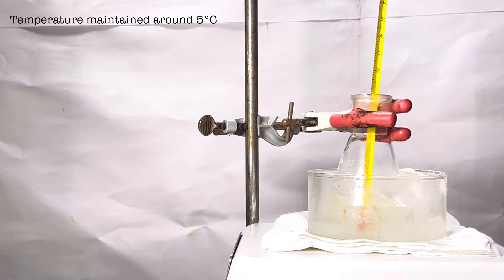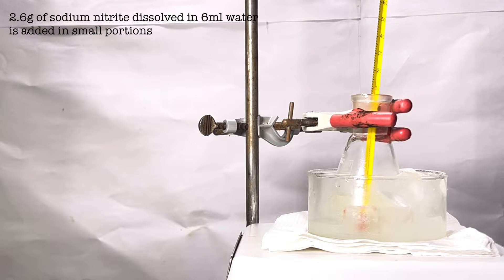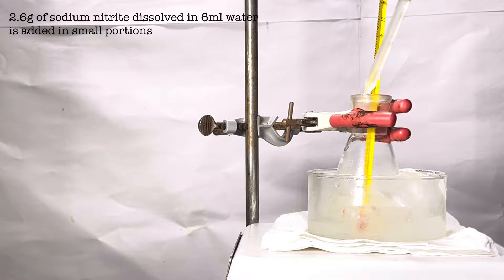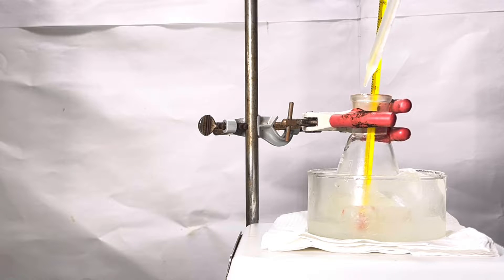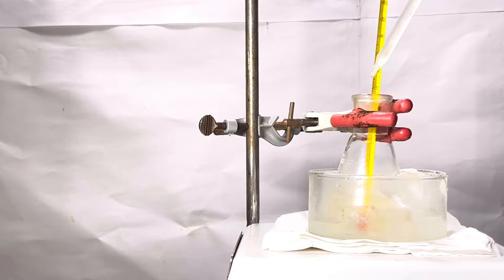chilled sodium nitrite solution containing 2.6 grams of it in 6 ml of water is added in small portions using a glass pipette. A very keen eye has to be kept on the thermometer as the temperature should not rise above 10 degrees C. This could result in the formation of tarry unwanted side products.